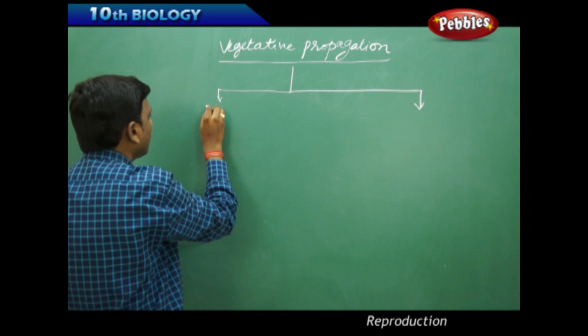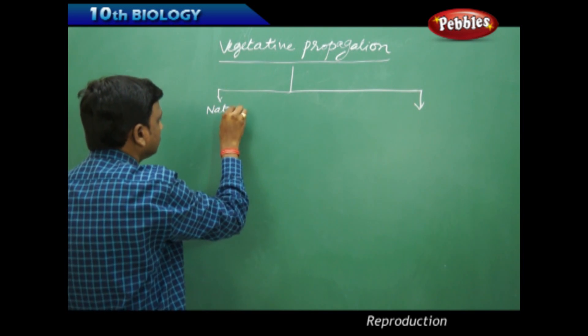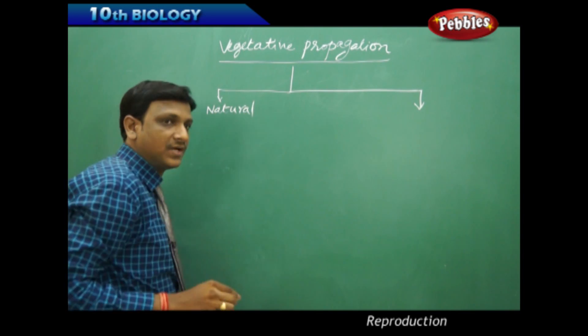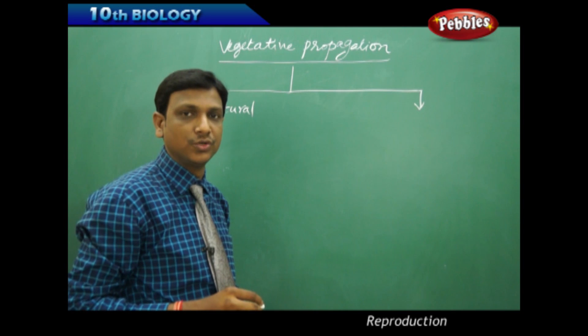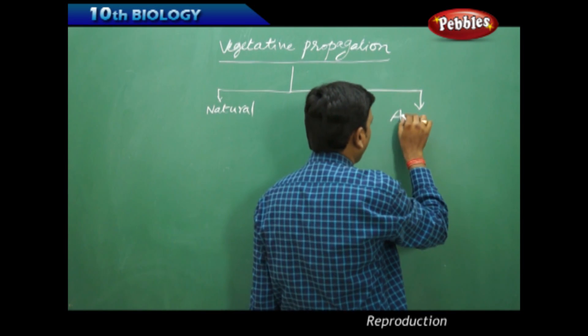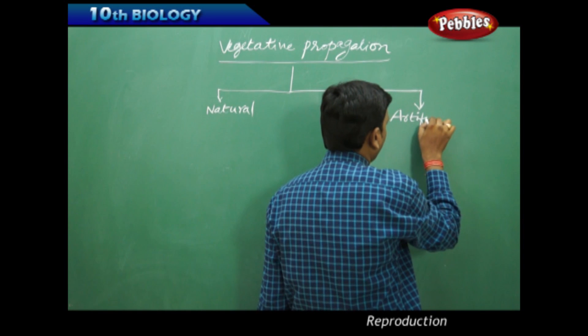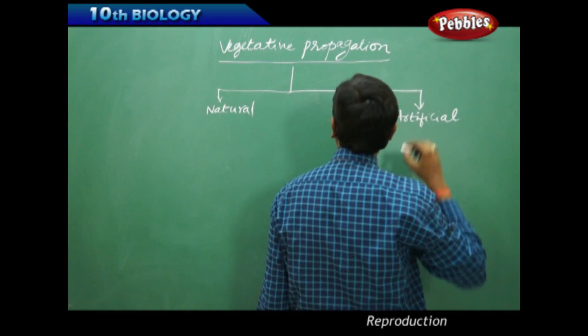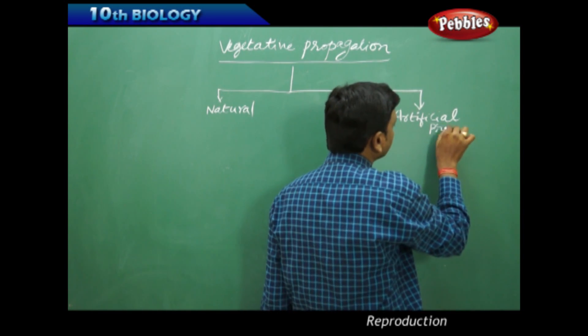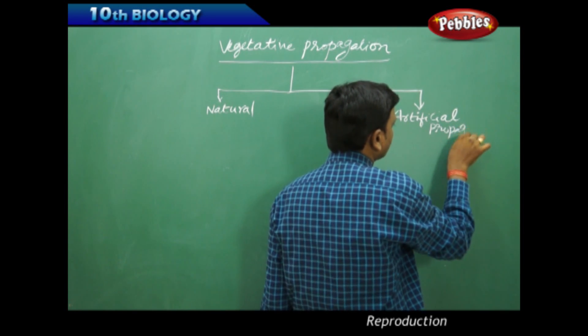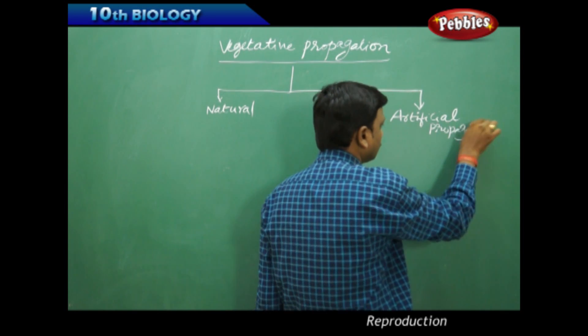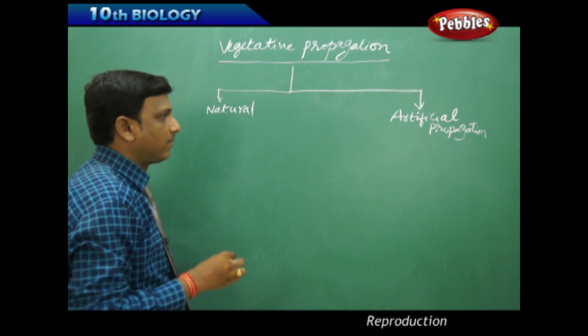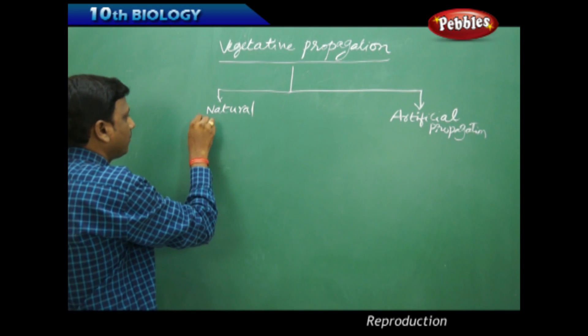One is natural, that means which happens naturally in nature without human intervention, and artificial propagation, whereas this is the natural propagation.